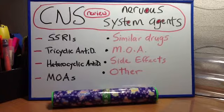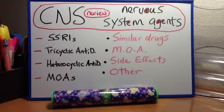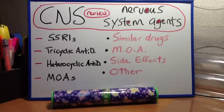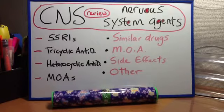Next: tricyclic antidepressants. Similar drugs include desipramine, imipramine, and bupropion. Mechanism of action: blocks the reuptake of norepinephrine and serotonin. Clinical uses: depression, enuresis, and chronic pain syndromes.